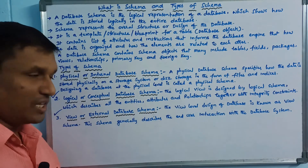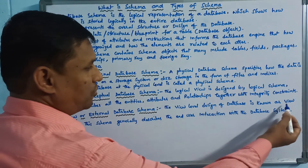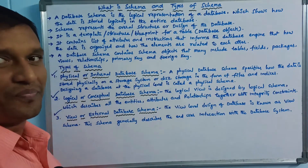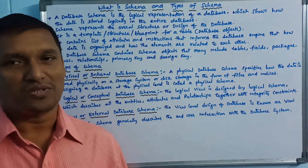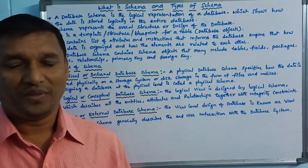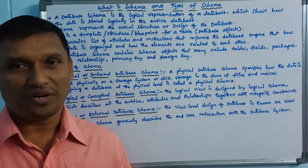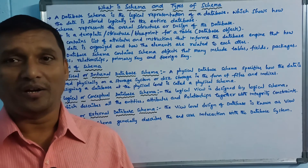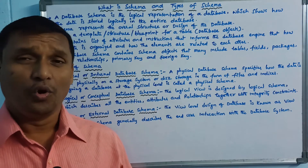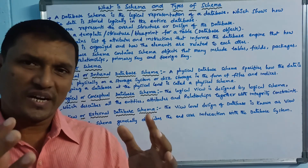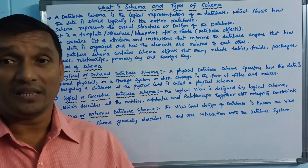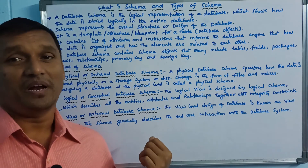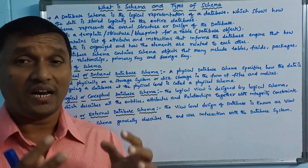The third one is view — the external database schema. The view level of the design of the database is known as view schema. This schema generally describes the end user interaction with the database system. For example, at an ATM, the user sees a screen, inserts a card, chooses a language, selects an amount, and performs a transaction. This is the external level of the database.